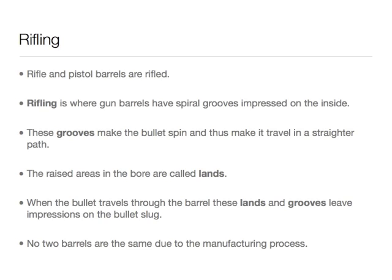Rifle and pistol barrels are what are called rifled. Rifling is where the gun barrels have spiral grooves impressed on the inside. These grooves make the bullet spin and thus make it travel in a straighter path. The raised areas in the bore are called the lands. When the bullet travels through the barrel, these lands and grooves leave impressions on the bullet slugs, which are also called lands and grooves. No two barrels are the same due to the manufacturing process.